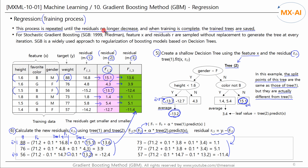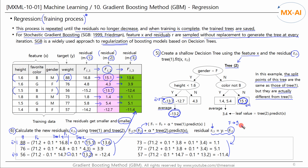In 1999, Friedman proposed stochastic gradient boosting (SGB), which samples the data without replacement each time a tree is created in each iteration round. SGB is a widely used approach to regularization of boosting models based on decision trees. The key to the GBM training process is to gradually reduce the residuals — as residuals decrease, the predicted Y-values become closer to the actual Y-values. The process repeats: estimate initial Y, compute residual, predict new Y, compute next residual, over and over.